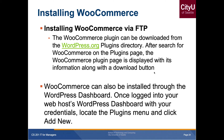To install WooCommerce, you can download it from the WordPress.org plugins directory via FTP. Alternatively, from your WordPress dashboard, go to Plugins, search for WooCommerce, select it, install it, and then activate it.